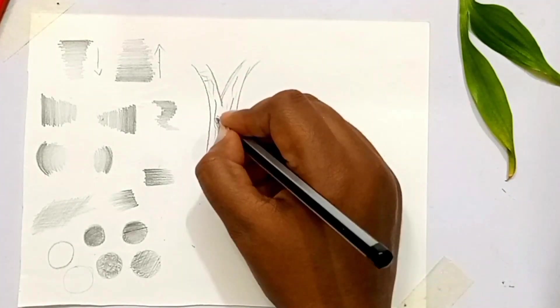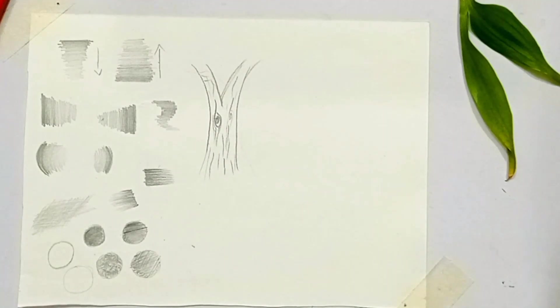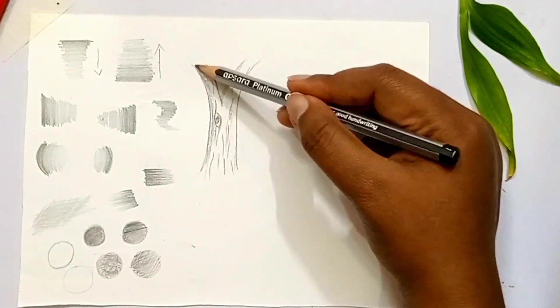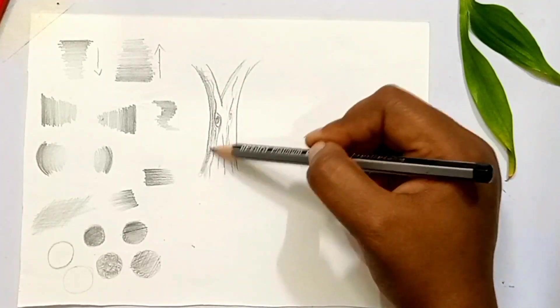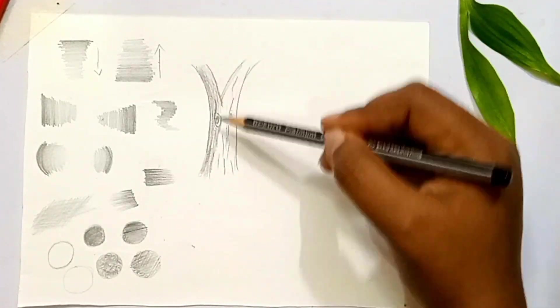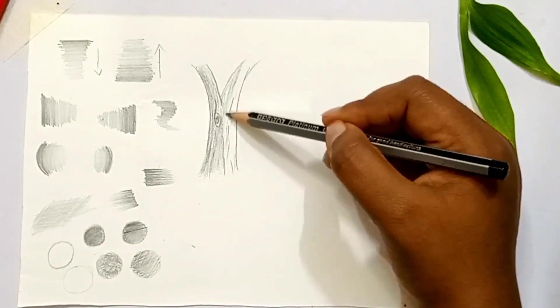One side will be dark and one side will be light, just to show you where you can use it. This is the practice job. How do you use it? How do you add a beautiful look to your drawing?